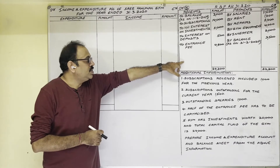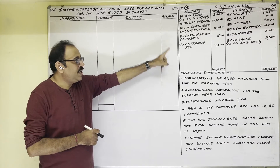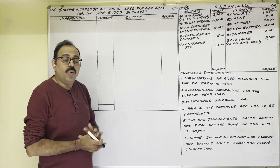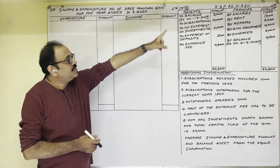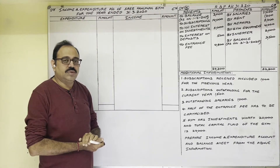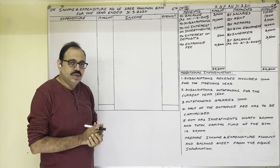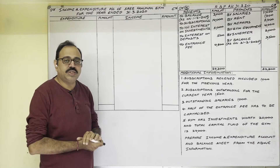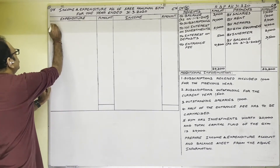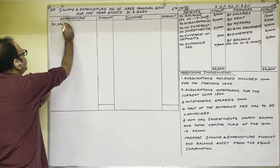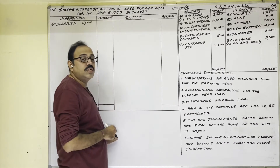Similarly, received side amounts go on the credit side. The received side has both capital incomes and revenue incomes, but only revenue incomes should be taken here. Starting with payments: Salaries 11,000. A firm pays salary to employees every month — this is repeated expenditure, so it is revenue expenditure. We show salaries 11,000 in the inner column because an adjustment is given: adjustment number three shows outstanding salary of 1,000.